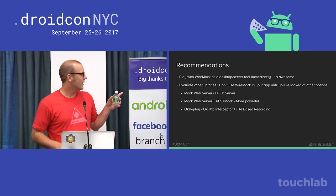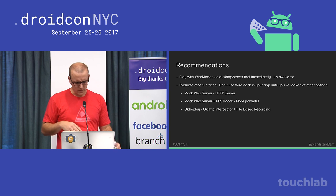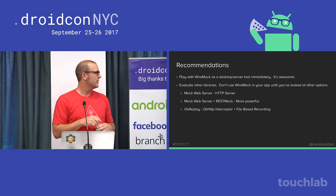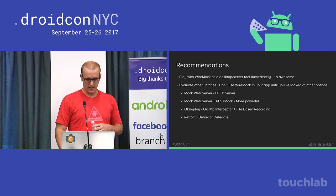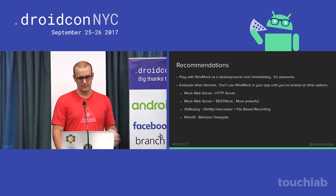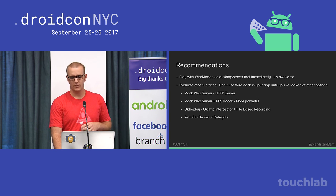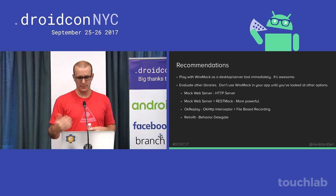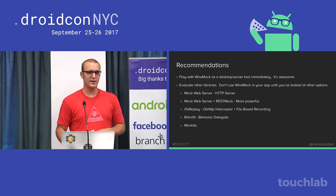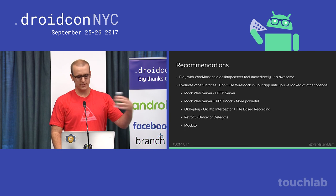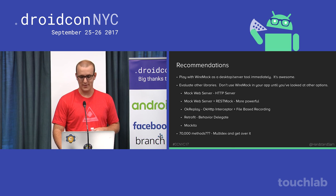OkReplay is a way of mocking your OkHttp stack — instead of mocking to a web server, you add an interceptor that returns a response. That's done by Airbnb. Retrofit also has a way of doing mocks via a behavior delegate — I tried it first because I didn't want to go to the server, but I found error scenarios were really hard to do. And if you want, you can just use Mockito — instead of going out to your networking layer, just say when you call this, return this. That said: 70,000 methods, just MultiDex and get over it. It's not in your production app. It just makes your life better when you're testing.